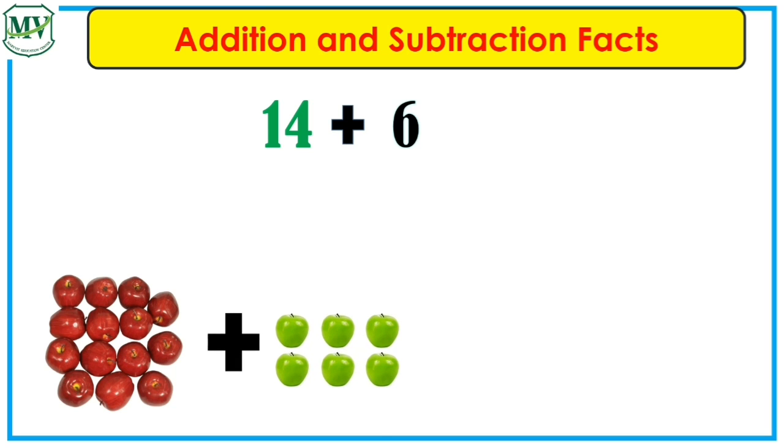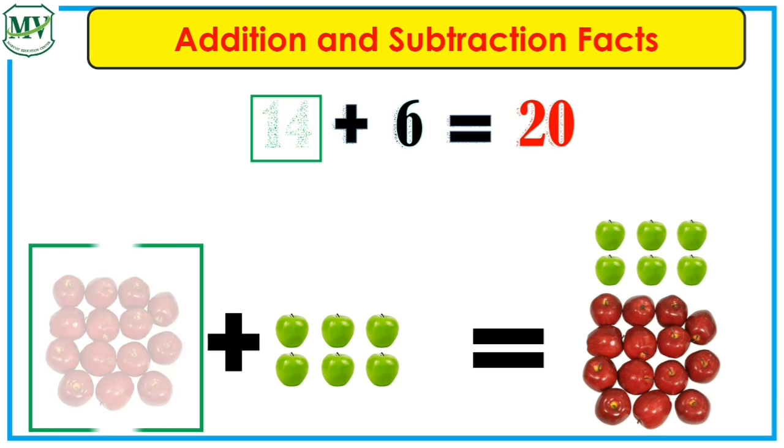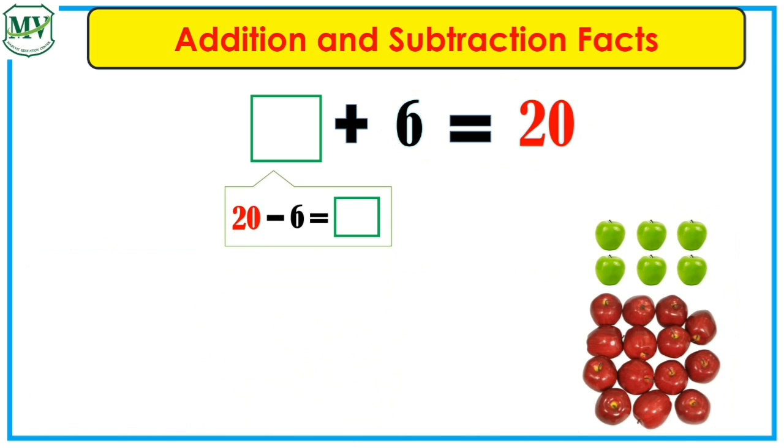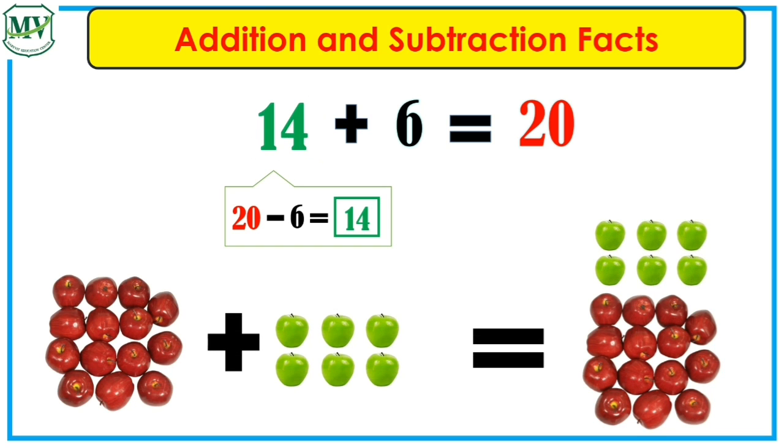14 plus 6 is equal to 20. Now, what if the addend is missing? What should we do? That's right! We subtract 6 from 20. So, 20 minus 6 is equal to 14. The unknown number is 14, and 14 plus 6 is equal to 20.